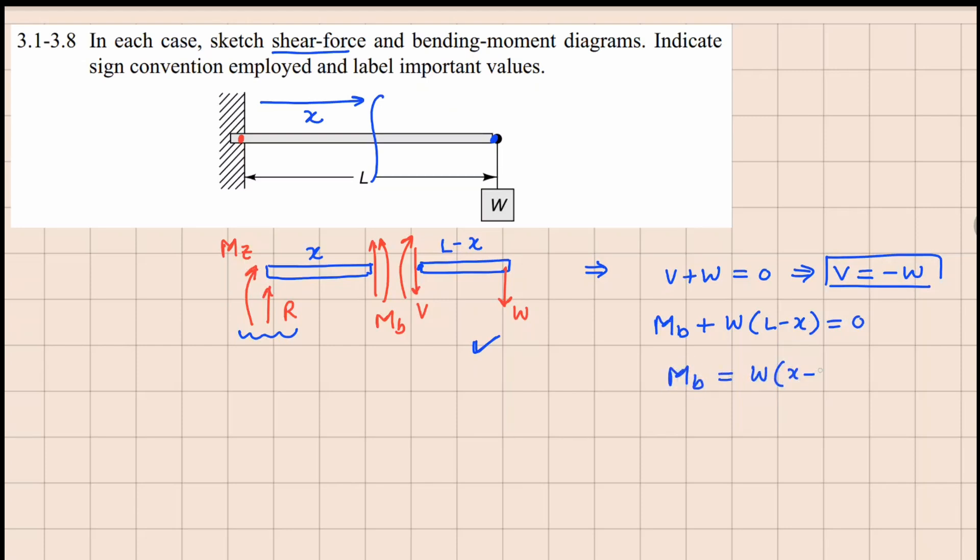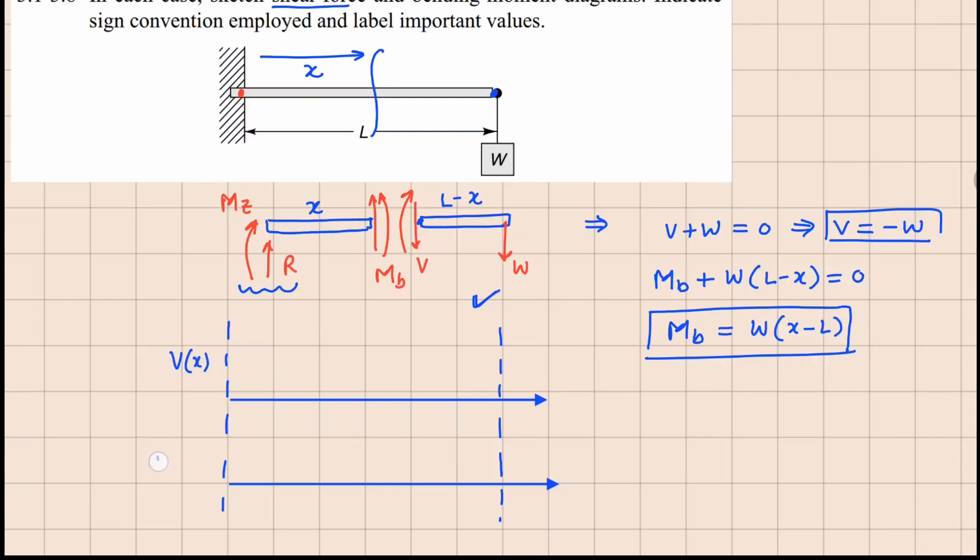Now the next thing is to make these plots here. So let's say this is an x axis and this is another axis here. So here we can plot shear force and here your bending moment. The shear force is a negative value, maintaining minus W, so I can just plot it in this manner. So this right here is minus W.